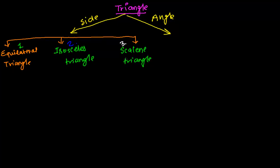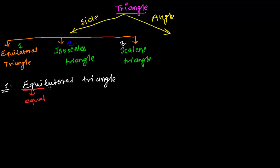Let's learn one by one. First, let's talk about the equilateral triangle. 'Equi' means equal and 'lateral' means sides. So a triangle which has equal sides is called an equilateral triangle. Let me show you a figure to make it more clear.